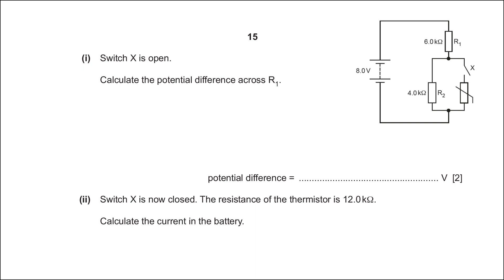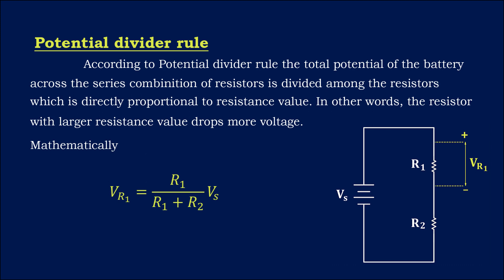When the switch is open, the circuit will be reduced such that the resistors R1 and R2 are connected in series now. To find the potential difference across the resistor R1, apply the potential divider rule. According to potential divider rule, if two resistors R1 and R2 are connected in series, then the potential difference across the resistor R1 is given by the formula.